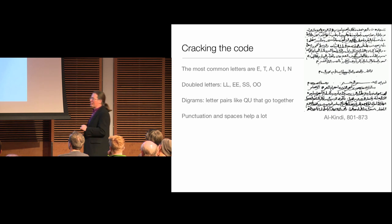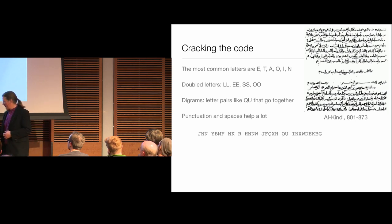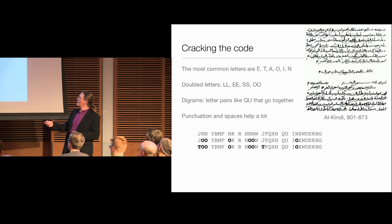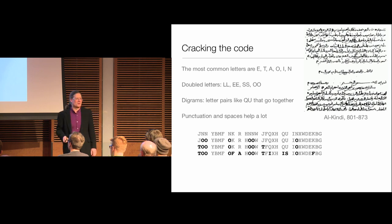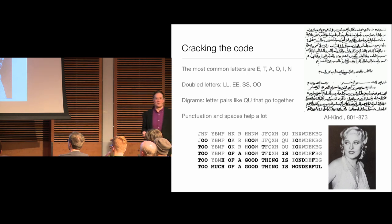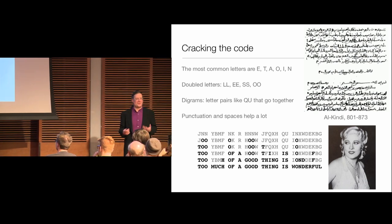It also helps if the person you're eavesdropping on has kept the spaces and punctuation, as in the cryptoquip in certain syndicated newspapers. You might guess that 'NN' is probably really 'OO.' Once you know that, you can narrow things down — a one-letter word is certainly either I or A. With a few lucky guesses, you can fill in the blanks and decode the message fairly quickly. Even though we had an enormous number of possible codes, frequency analysis lets us break it.